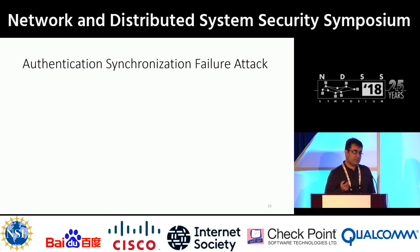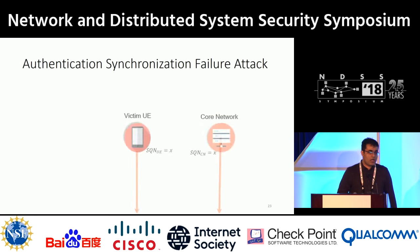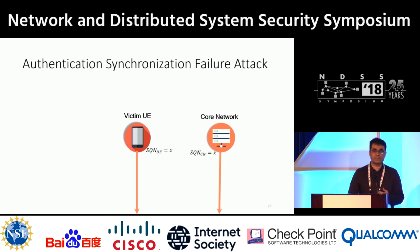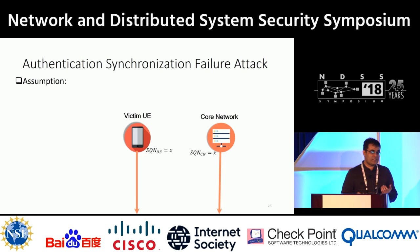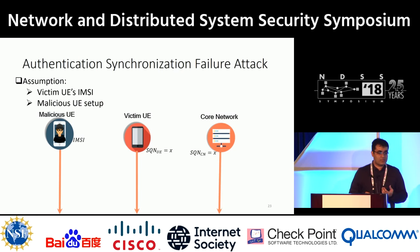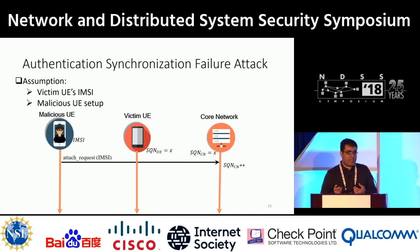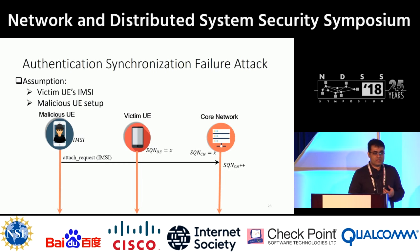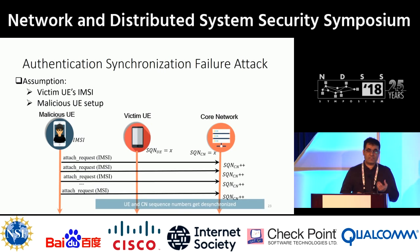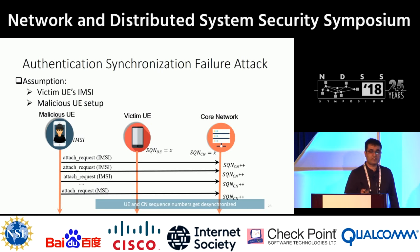Here is one attack from the attach procedure. Assume the victim and the core network have synchronized sequence numbers at value X. The adversary knows the IMSI of the victim UE and is capable of setting up a malicious UE. Knowing the IMSI, the malicious UE impersonates the victim and sends attach request messages. Receiving these messages, the core network increments the sequence number. By sending many attach request messages, the sequence number between the victim UE and the core network becomes desynchronized. We call this the authentication synchronization failure attack.